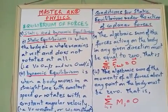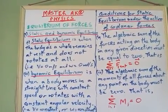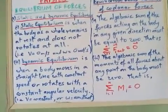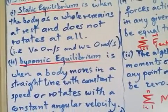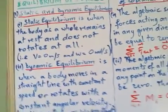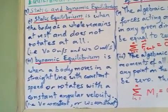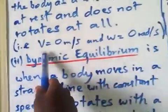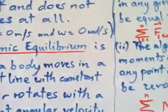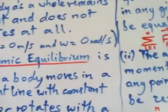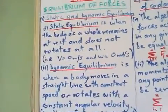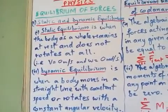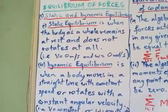Static equilibrium is when the body as a whole is at rest and does not rotate at all. In that case, the linear velocity of the object is zero and the angular velocity is also equal to zero, because the object is not moving and not rotating.